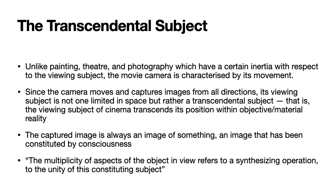Even though theatre is more three-dimensional, you still have to sit in a particular place in the centre in front of the stage. If you sit too much to the side in a theatre, you may see what is happening backstage. So painting, theatre, and still photography impose a certain kind of inertia — you have to be in one particular place. But unlike that, the movie camera is characterised by its movement.